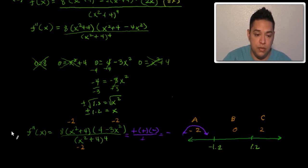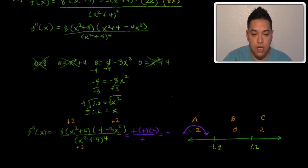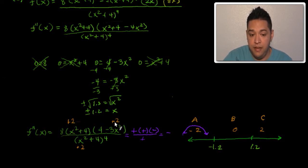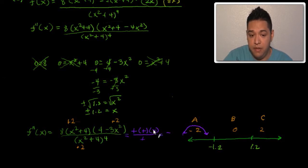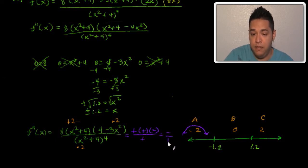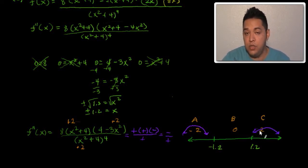Now let's plug in x = 2. The 8 is still positive, (x² + 4) is still positive. For (4 − 3x²): 2² is 4, times negative 3 is negative 12, and 4 minus 12 is still negative. The denominator remains positive. So positive times positive times negative, divided by positive, is still negative — we're still concaving down from 1.2 to positive infinity.